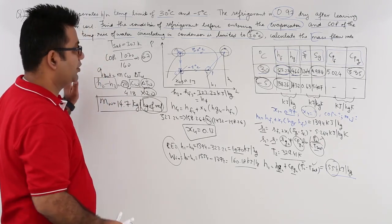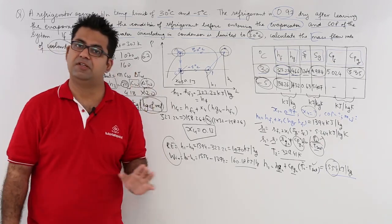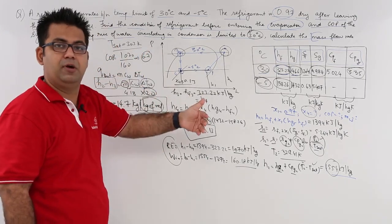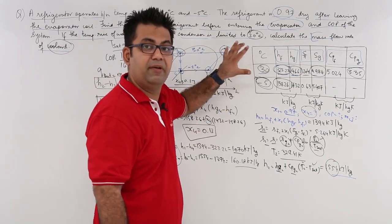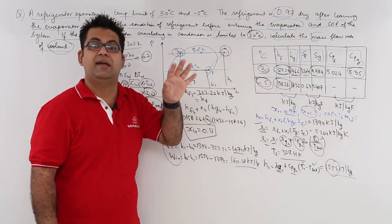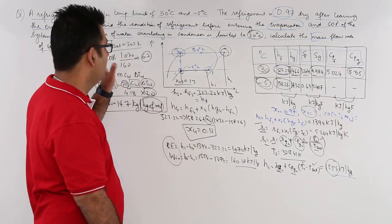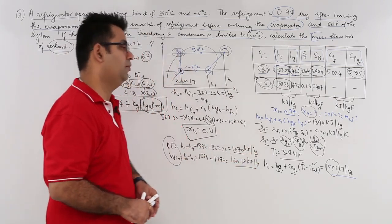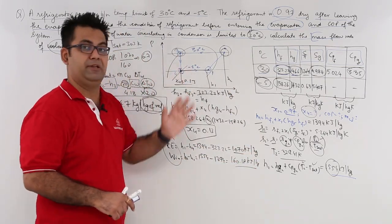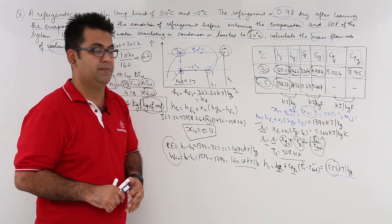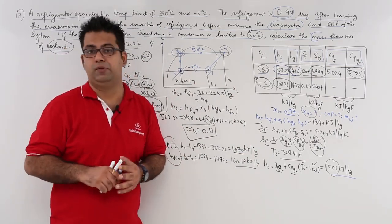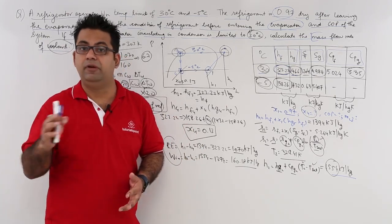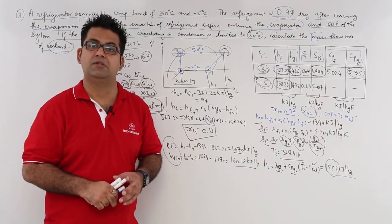This is how you attempt a question on the vapor compression cycle: read the question, draw the pH or TS plot if required, look at the property table given, and use basic thermodynamic relations to find enthalpy and temperature values at different locations. This was question 1 on the ideal vapor compression cycle. In the next video we will look at one more question on the vapor compression cycle.